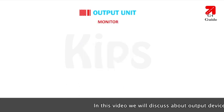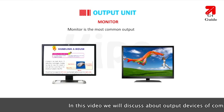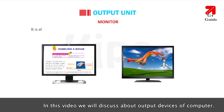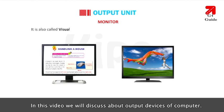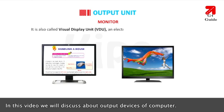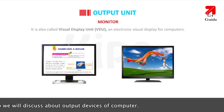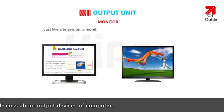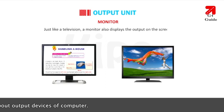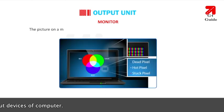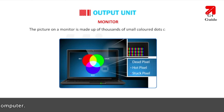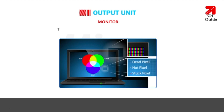Monitor is the most common output device. It is also called Visual Display Unit, VDU — an electronic visual display for computers. Just like a television, a monitor also displays the output on the screen. The picture on a monitor is made up of thousands of small colored dots called pixels. The output displayed on the monitor is called soft copy.